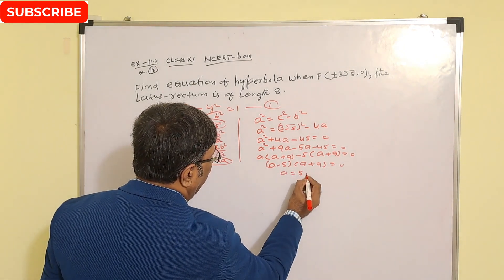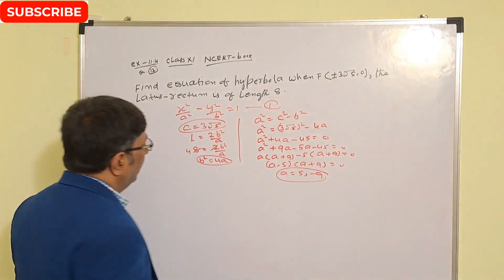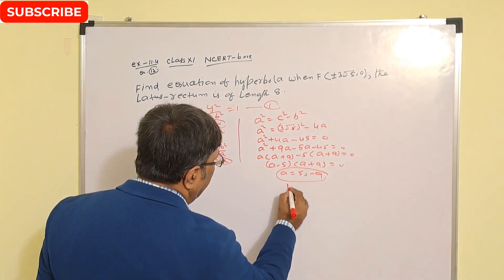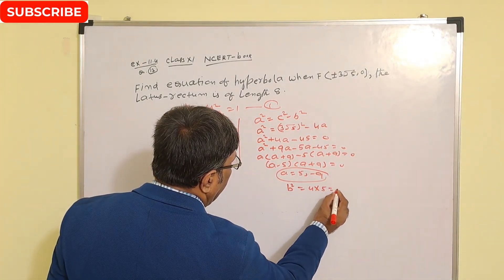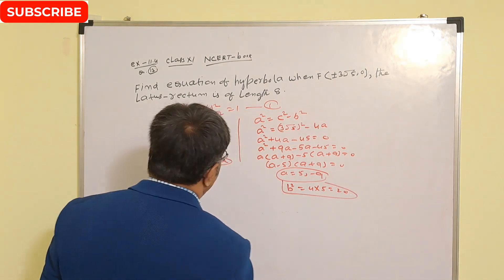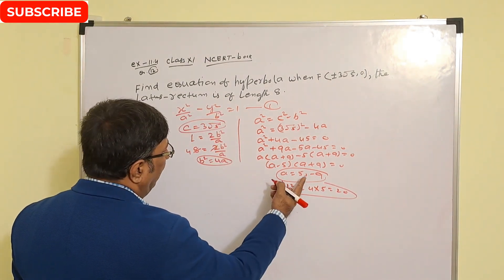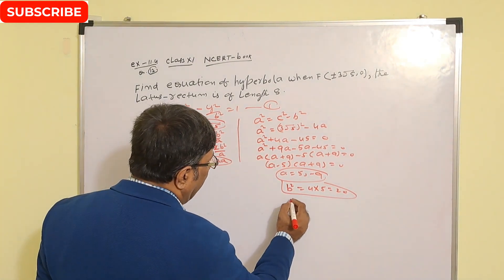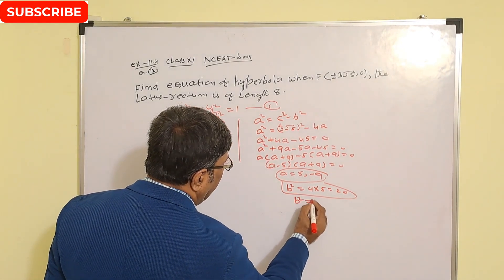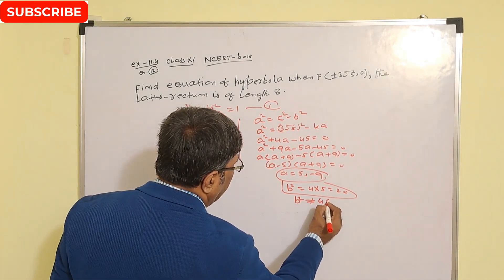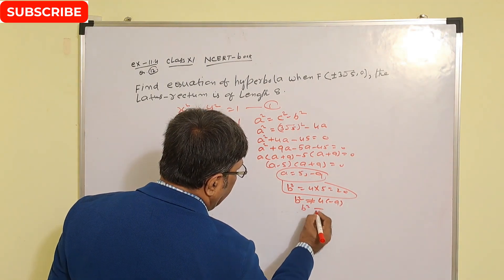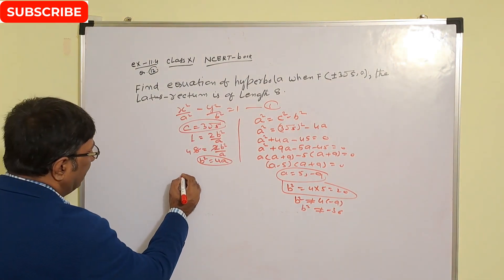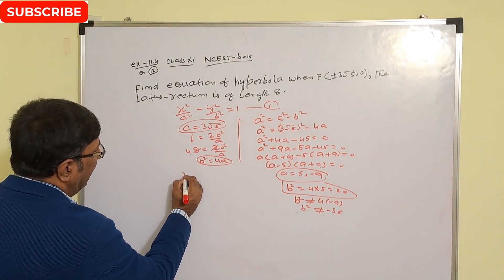So a = 5 or a = −9. Since b² = 4a, when a = 5, b² = 20. When a = −9, b² = −36, which is not possible since b² cannot be negative. So b² = 20.